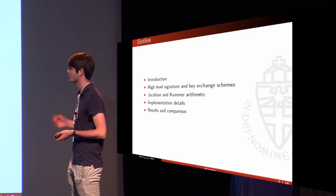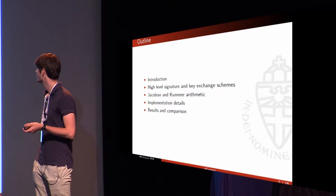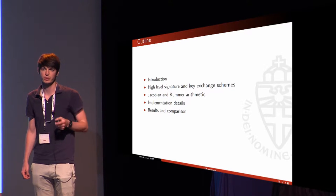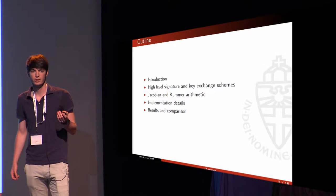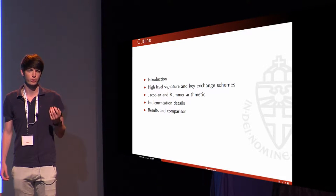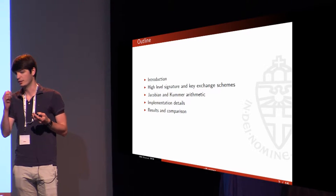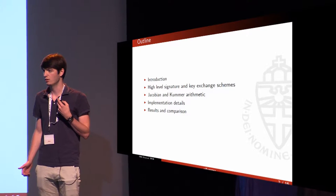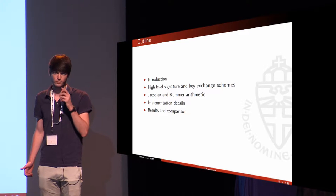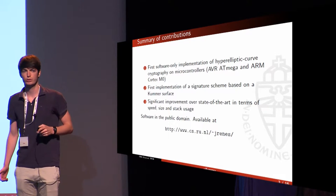I will give a short introduction to curve-based crypto, then talk about a top-down approach of our implementation. I'll give some info about our signature and key exchange scheme, then go down to the building blocks — the Jacobian and Kummer arithmetic — and finally some details about the finite field arithmetic. I will conclude by comparing our results to the state-of-the-art implementations, so a short executive summary.